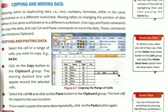Next is copying and moving data. Copying refers to duplicating data — that is, text, numbers, and formulas — either in the same worksheet or in a different worksheet. Moving refers to changing the position of the data either in the same worksheet or in a different worksheet. Use copy and paste commands to copy data, and use cut and paste commands to move data. These commands use the Windows clipboard.